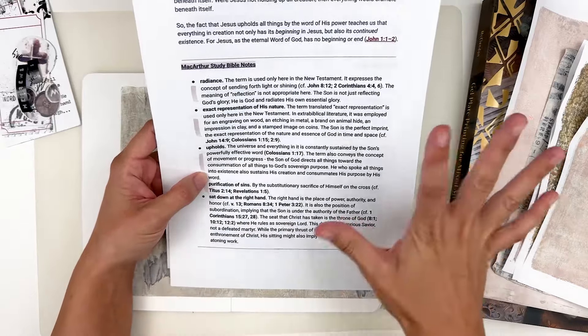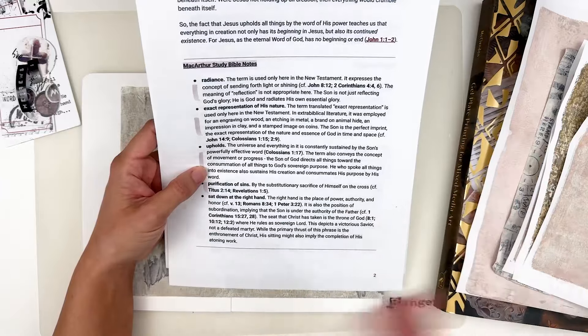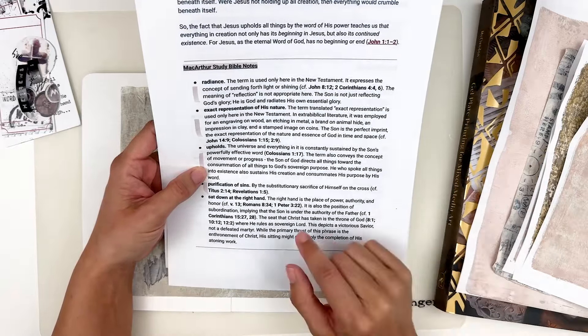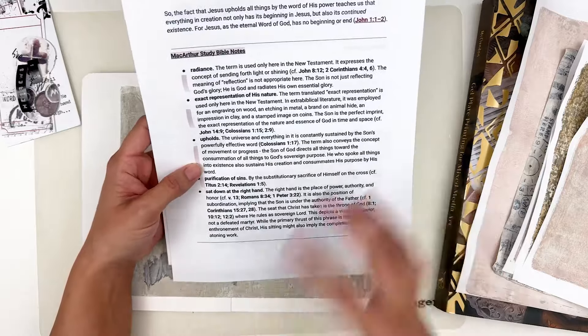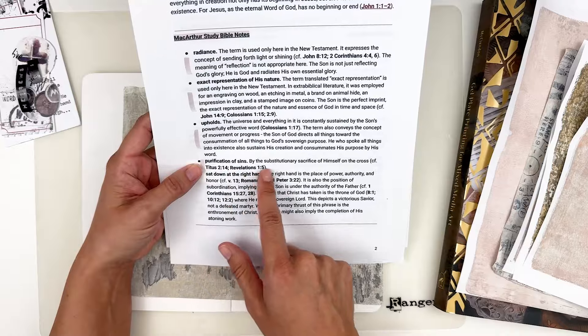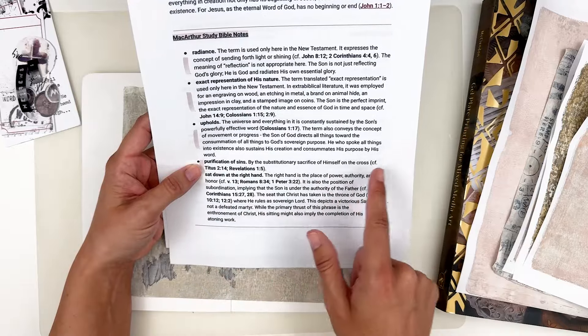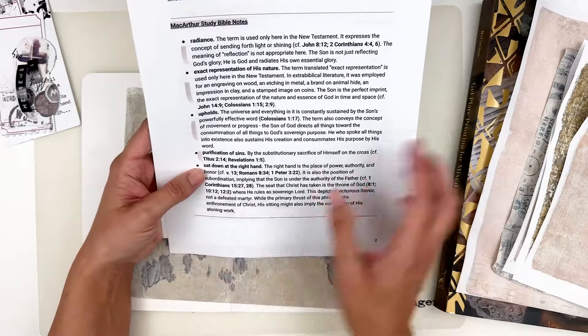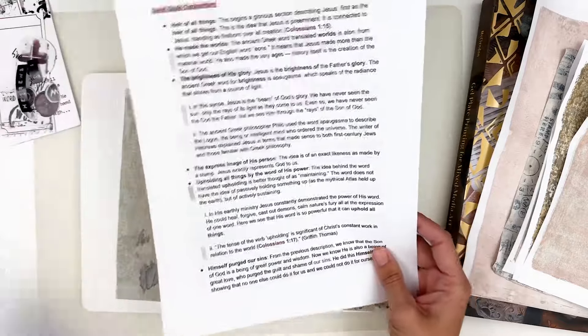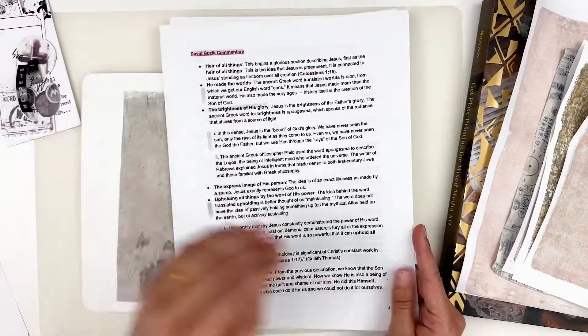Upholds the universe and everything in it's constantly sustained by the sun's powerfully effective word. The term also conveys the concept of movement or progress. The son of God directs all things toward the consummation of all things to God's sovereign purpose. He who spoke all things into existence also sustains his creation and consummates his purpose by his word. This isn't something that's just been done. It's being actively done yesterday, today, and tomorrow. This is just something that is continually happening. And we have that assurance knowing that Jesus is continually doing that for us. Purification of sins by the substitutionary sacrifice of himself on the cross.